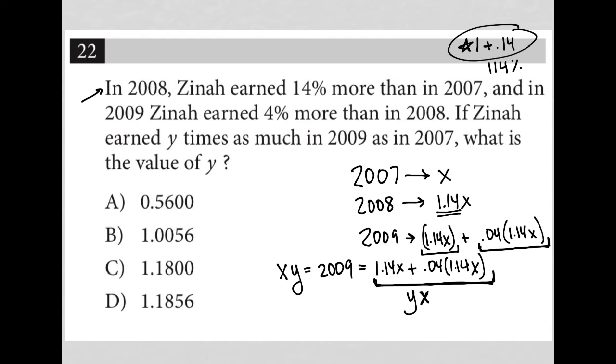So let me go to my calculator and see, well, what is 0.04 times 1.14? Let's see what that is, 1.14 times 0.04. I get 0.0456. So I get basically, this is 1.14X plus 0.0456X.